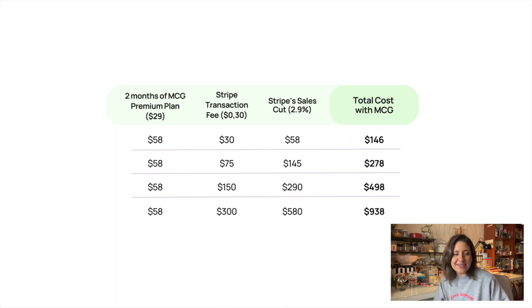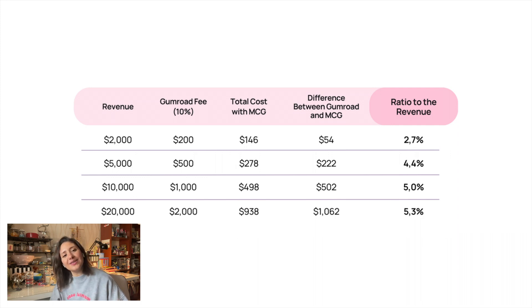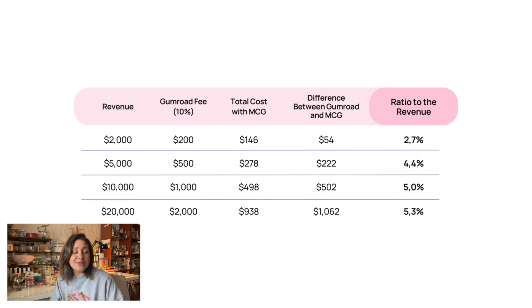Let's see the difference between the two platforms. In our scenario — two months, selling a $20 product, from 100 to 1,000 units — the difference between Gumroad and MiniCourseGenerator is pretty high. You can save at least 2.7% of your revenue if you sell on MiniCourseGenerator rather than Gumroad. And if your sales volume is increasing, the difference will increase further.